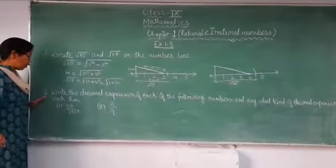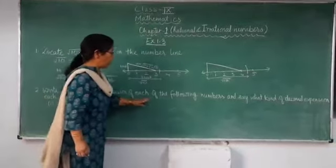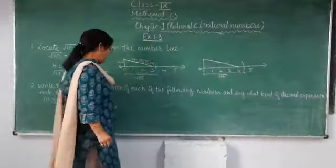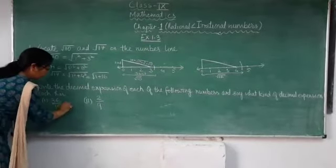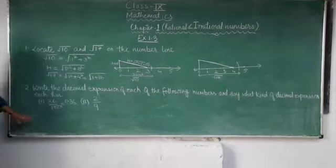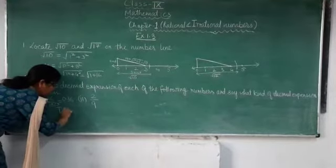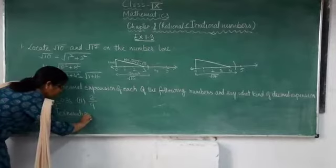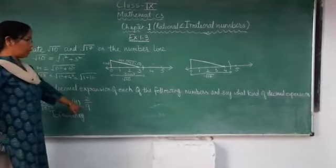Now question number 2: write the decimal expansion of each of the following numbers and say what kind of decimal expansion each has. First, 36/100 — dividing gives 0.36, and no other numbers keep repeating, so this is called a terminating decimal.